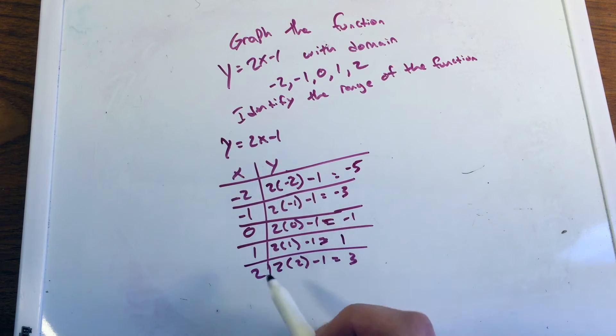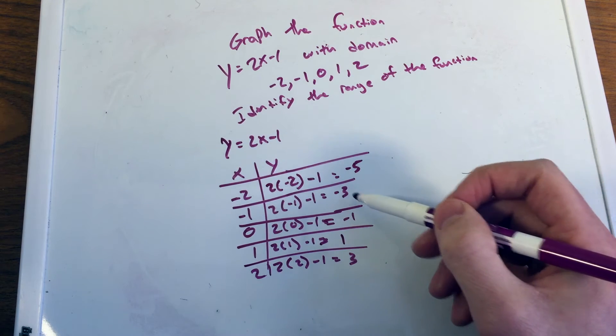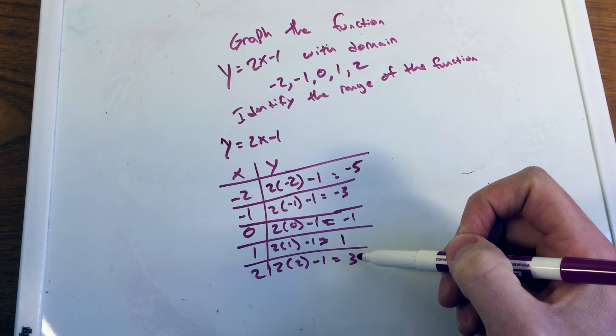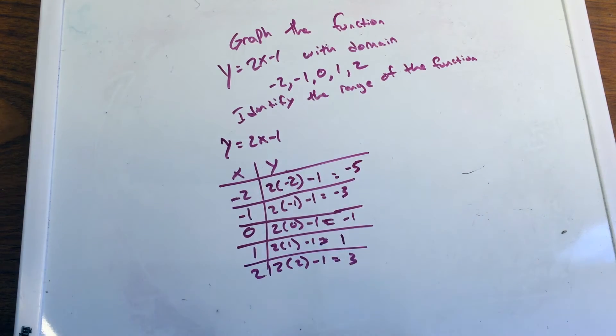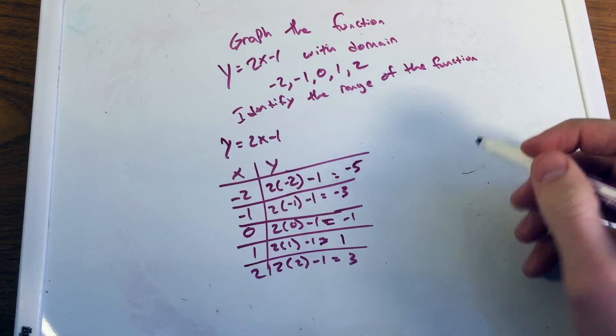And so we have x values of negative 2, negative 1, 0, 1, 2. And correspondingly we have negative 5, negative 3, negative 1, 1, and 3. And so these are x and y values of our parts of our function, given our certain domain.